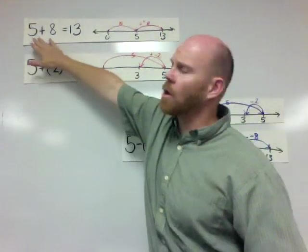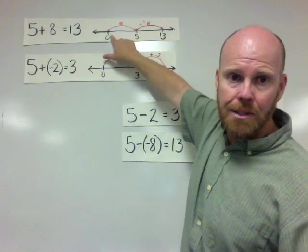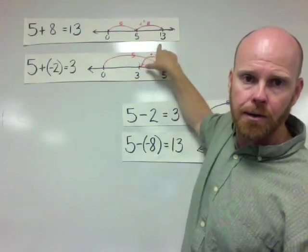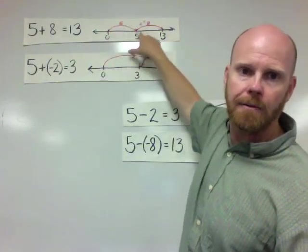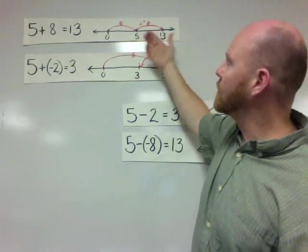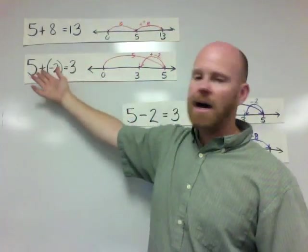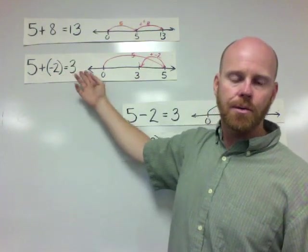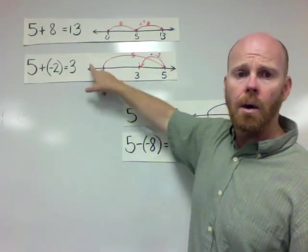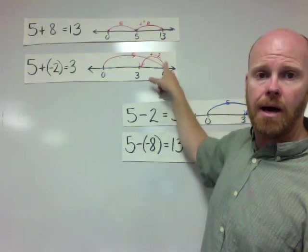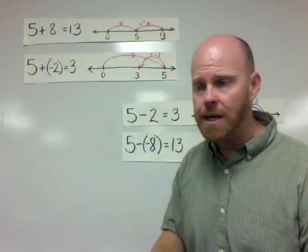We're going to start off with 5 plus 8 equals 13, and that's modeled on a number line by two hops to the right — a hop of 5 and a hop of 8 — giving us the answer 13. And then we've got 5 plus negative 2 equals 3, represented by one hop to the right and another hop to the left, giving us the answer 3.